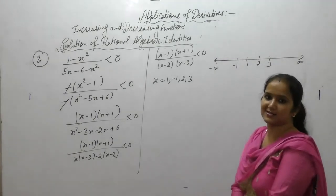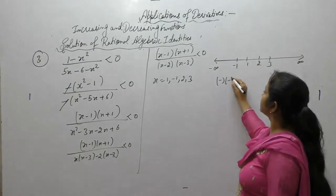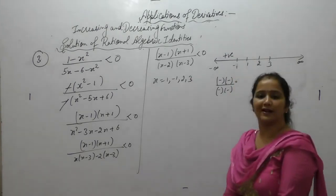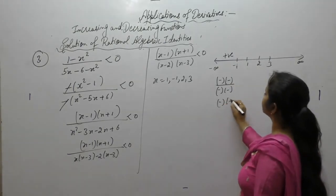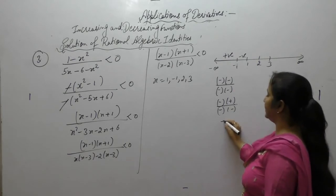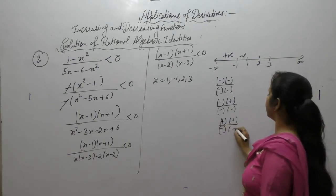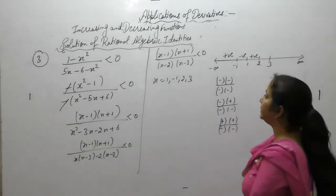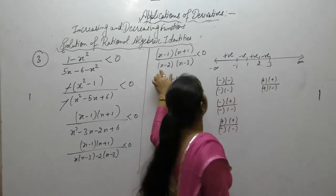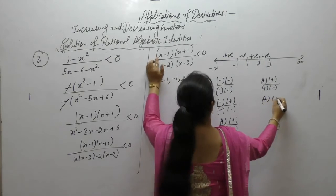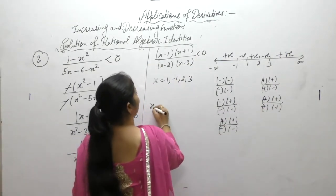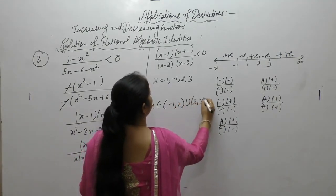Checking intervals: minus infinity to minus 1 (use minus 2): (−2−1)(−2+1)(−2−2)(−2−3) gives positive. Minus 1 to 1 (use 0): negative. 1 to 2 (use 1.5): positive. 2 to 3 (use 2.5): negative. 3 to infinity (use 4): positive. Since we need less than 0, the solution is x ∈ (−1,1) ∪ (2,3).